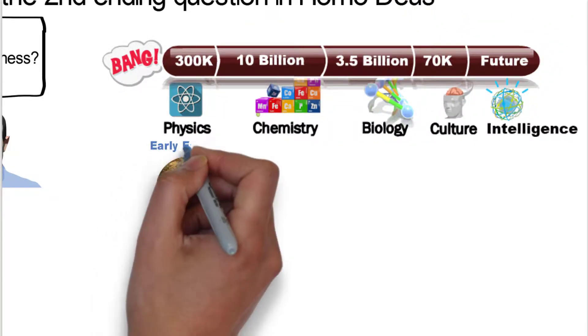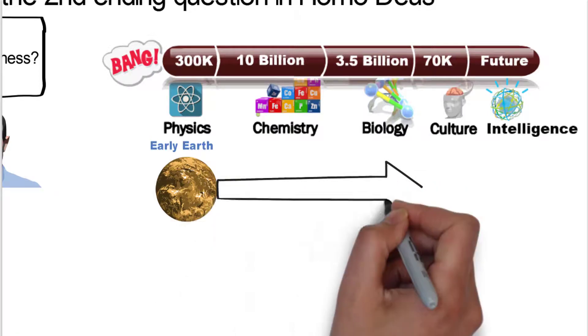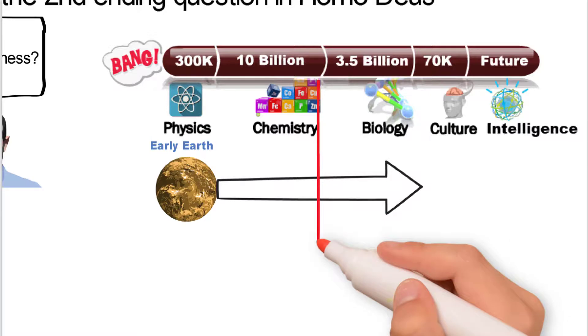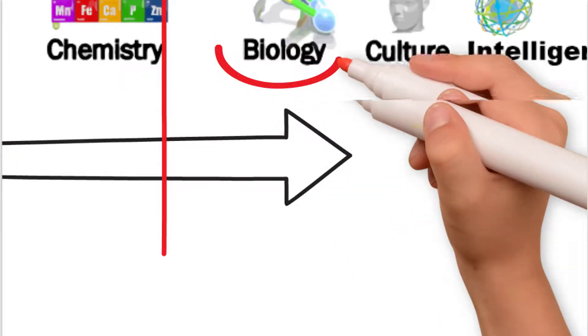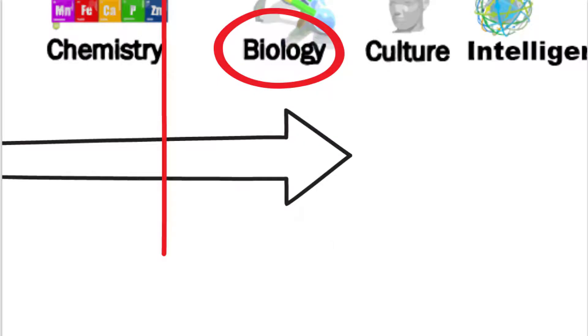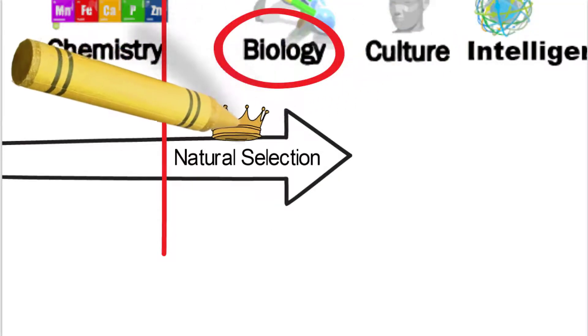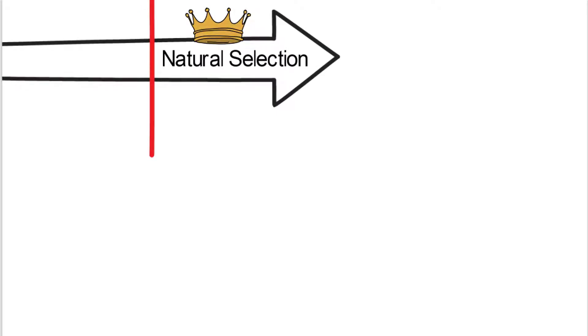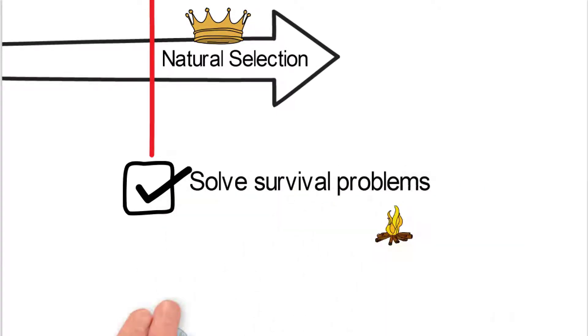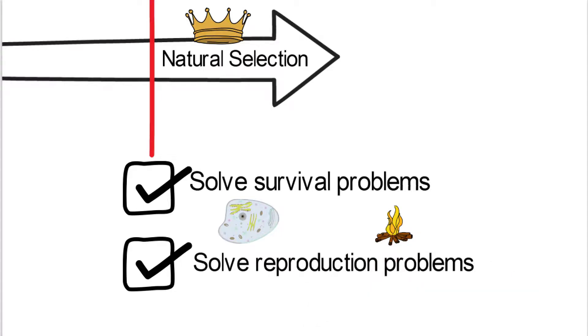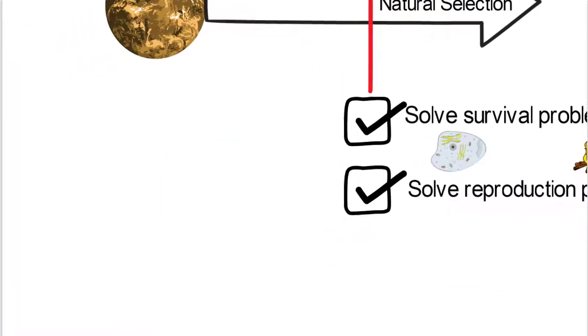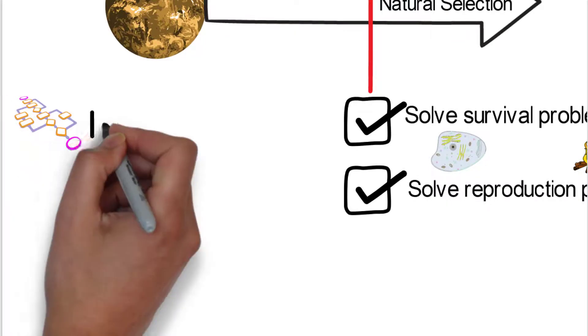We're going to start with the idea of the early Earth billions of years ago. For many billion years, over 10 billion years, it really had physics and chemistry, and there wasn't anything really new. But biology came along about 3 billion years ago, and all of a sudden the king of the world became natural selection. Natural selection is all about solving survival problems, where if you have an organism, it's able to move away from fire, whereas chemicals prior to that would have just fallen into the fire. And then also solve reproduction problems.